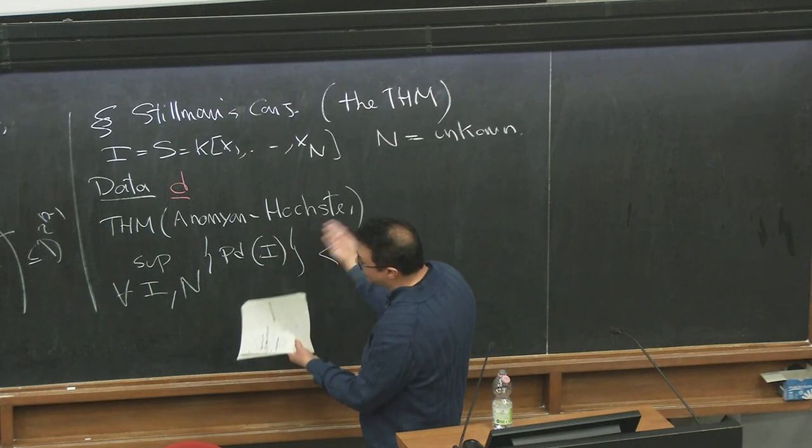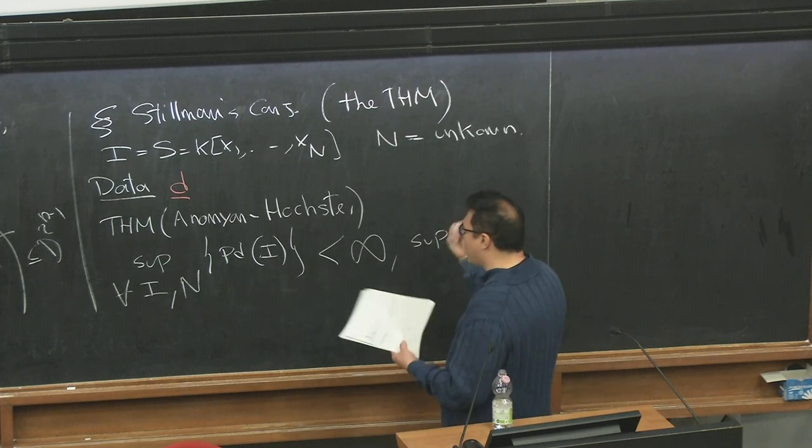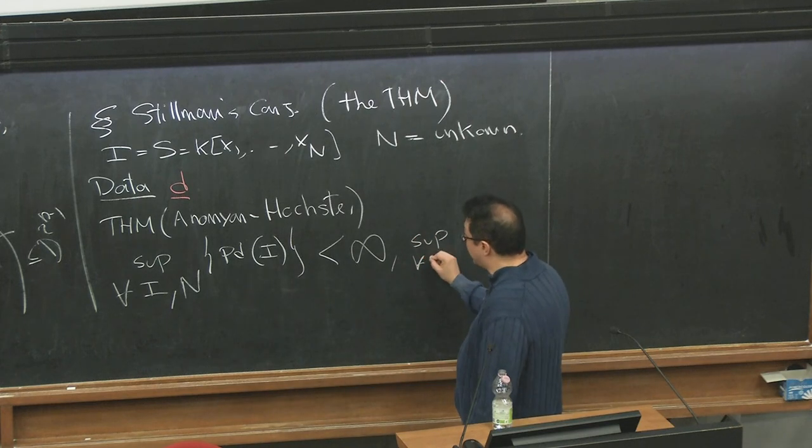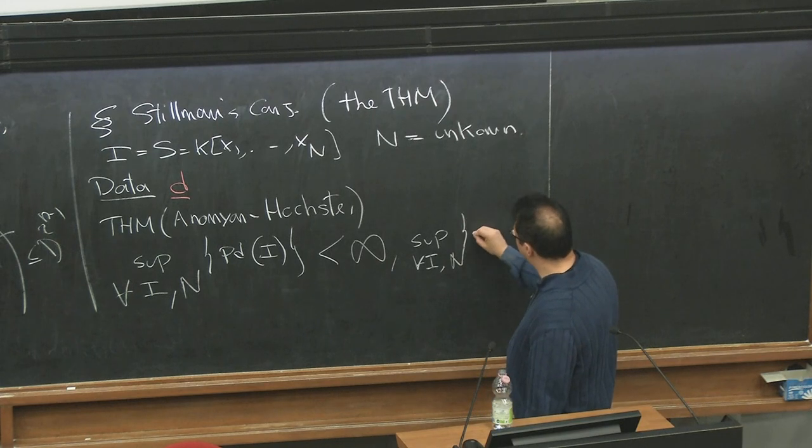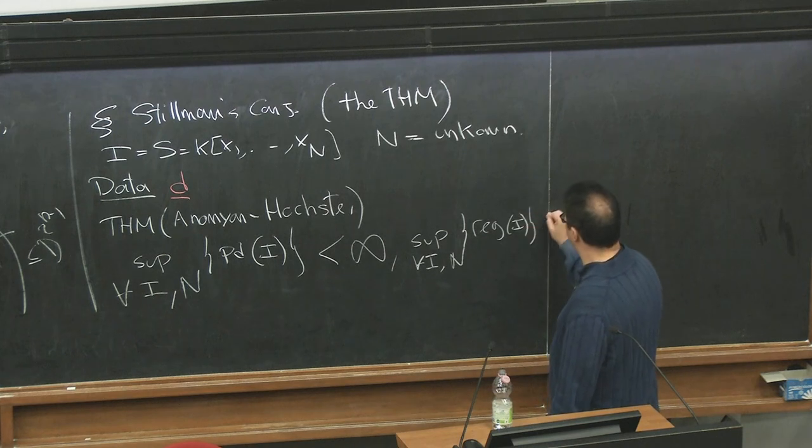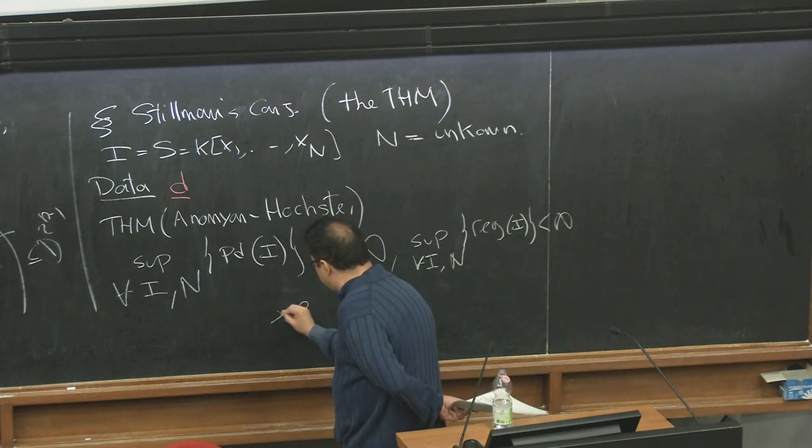for every I and for every N, and let's say we're looking at the projective dimension of I, this number is actually finite. It's not clear what the number actually is, but the point is that there exists a bound. It only depends on the data, the degree of the generators. It's independent of the number of variables.